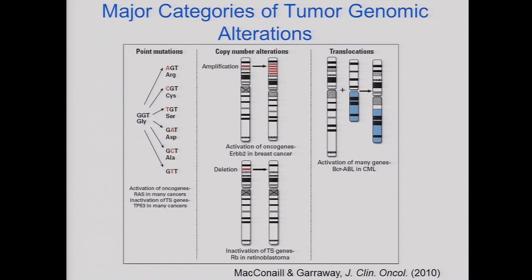And then finally there are translocations, or DNA rearrangements. BCR-ABL was the classic one, but now we recognize many of these. The genomic language for speaking about cancer genetic alterations — although we didn't use the term genomics at the time — was all in place by the early 80s.